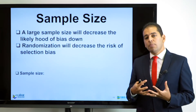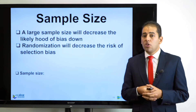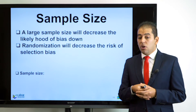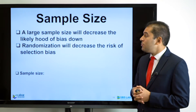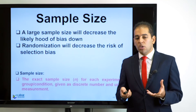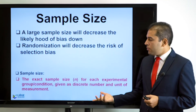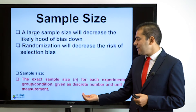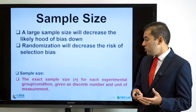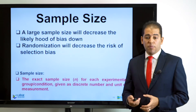The second aspect related to sampling is sample size. A large sample size will decrease the likelihood of bias, and randomization will decrease the risk of selection bias overall. We must always report in publications the exact sample size for each experiment or group condition, given as a discrete number and unit of measurement.